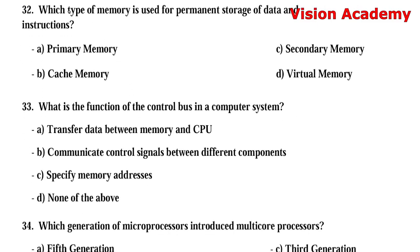Question number 32: Which type of memory is used for permanent storage of data and instructions? Option A: primary memory. Option B: cache memory. Option C: secondary memory. Option D: virtual memory. The right answer is Option C, secondary memory.